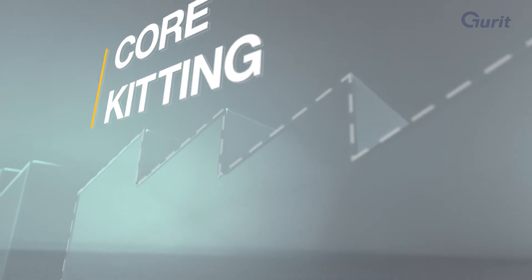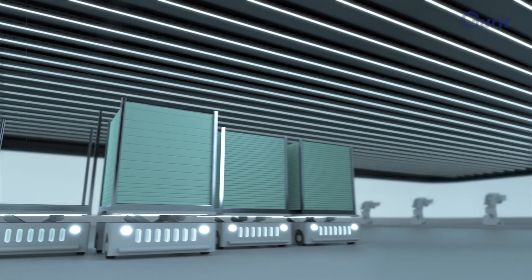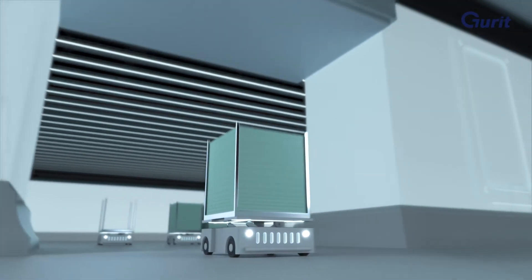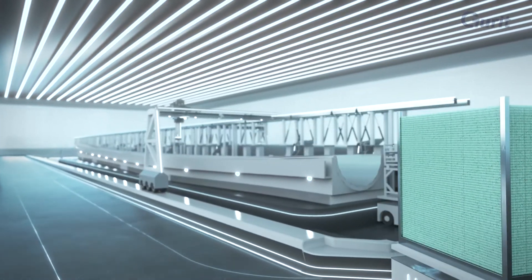Automated guided vehicles are delivering core material processed in the core kitting operations next door. Wireless technology and sensors allow for fast and precise pickup and positioning of the kits into the mold.